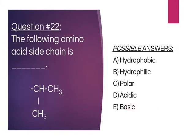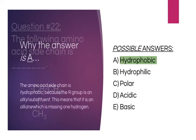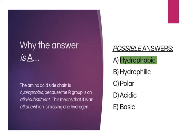Question 22: The following amino acid side chain is — A, hydrophobic; B, hydrophilic; C, polar; D, acidic; or E, basic. The amino acid side chain is A, hydrophobic, because the R group is an alkyl substituent. This means that it is an alkane which is missing one hydrogen.